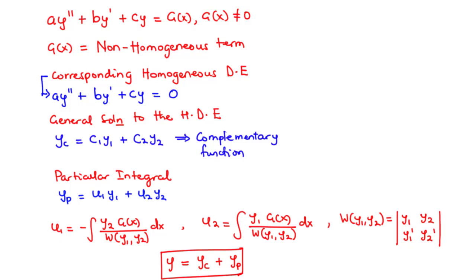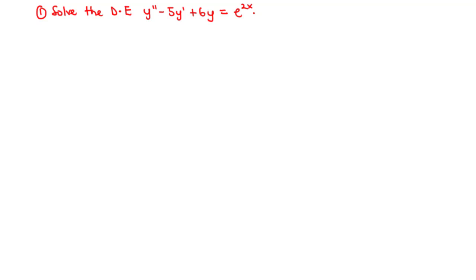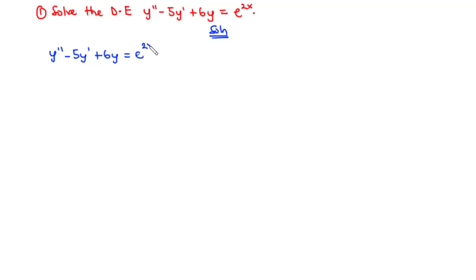In this lesson, we are going to solve three examples. Let's start off with the simplest one. For Example 1, we are going to solve the differential equation y″ − 5y′ + 6y = e^(2x). This is a familiar type of differential equation, and we are going to solve it using the method of variation of parameters.